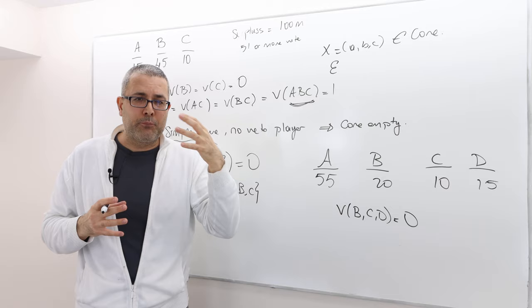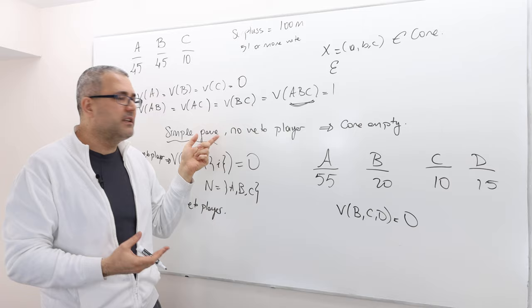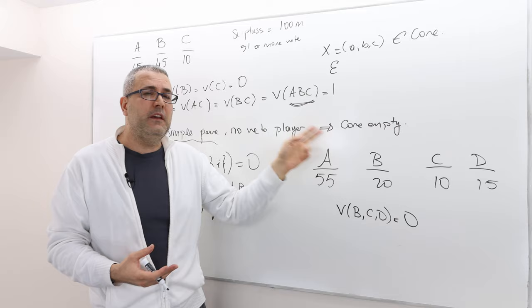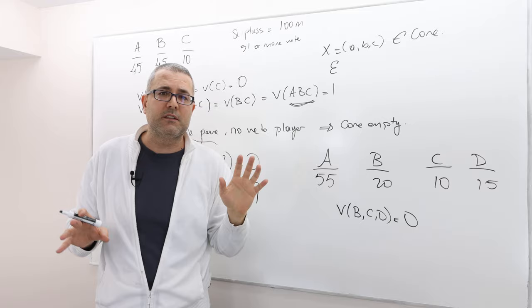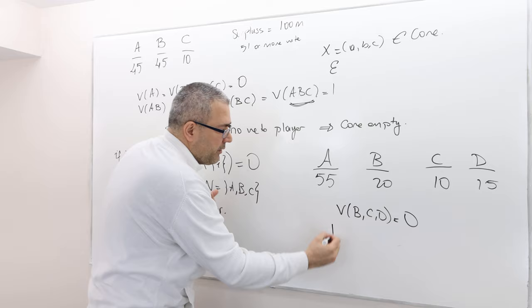So therefore in those games, remember this theorem has a second part. It says, well, in those games, simple games, the veto players are going to get a positive surplus and everybody else will get zero surplus. So in this game, for example, that theorem, thanks to us, says that player one should get, I'm sorry, player A should get one and all the others should get zero.